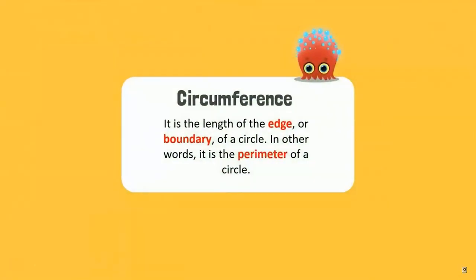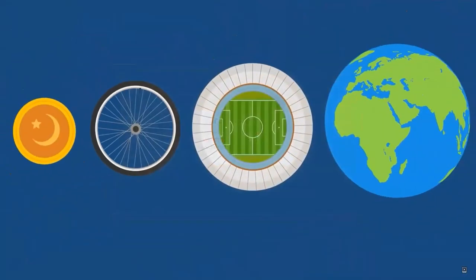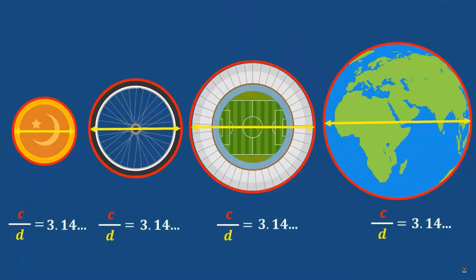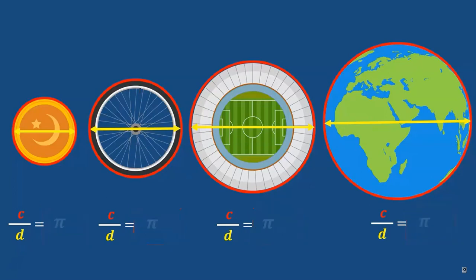The circumference of a circle is the length of the edge or boundary of a circle. In other words, it is the perimeter of a circle. Coming back to the question — whenever we divide the circumference of a circle by its diameter, we get the same value every time. Can you recall what this value is? It is pi.